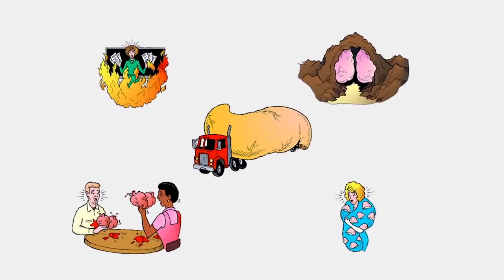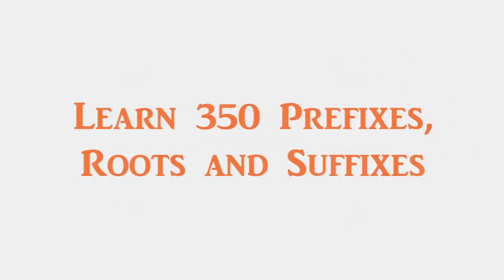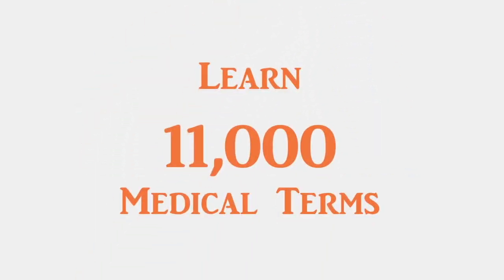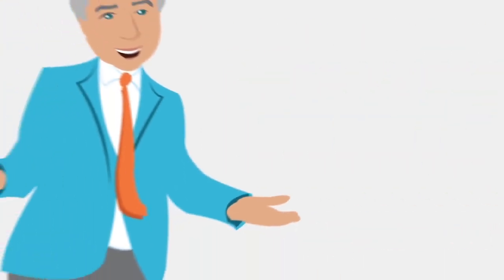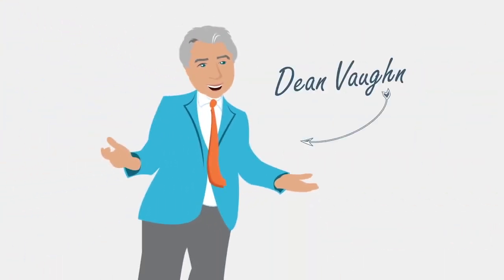We're talking some outlandish audio and visual associations here. Using the Dean Vaughan program, you'll learn and remember the meanings of 350 prefixes, roots, and suffixes that combine to form over 11,000 medical terms. And you'll do it in as little as 14 hours. Once you start learning medical terminology with Dean Vaughan, you'll be able to break down the meaning of virtually any medical term.